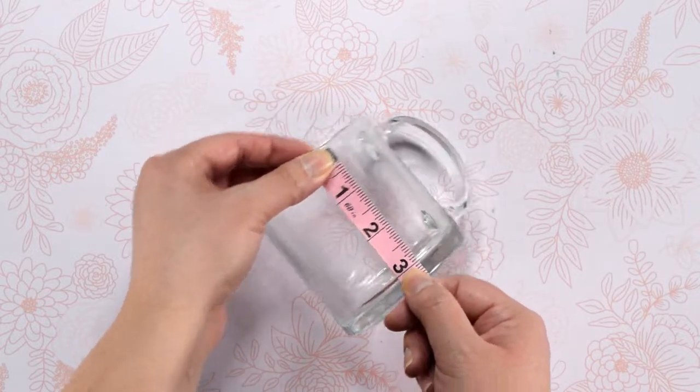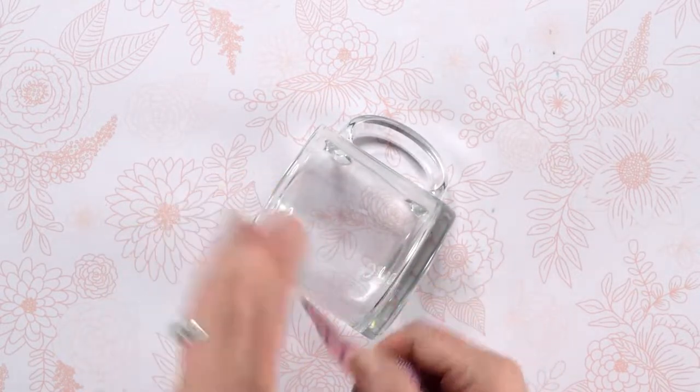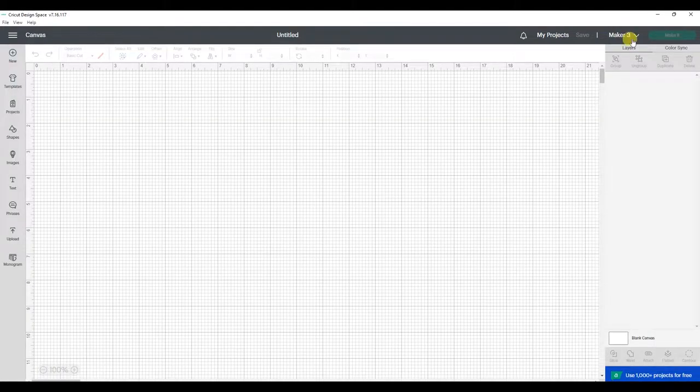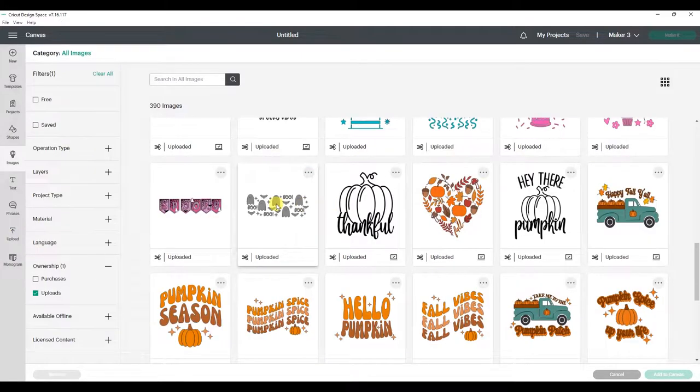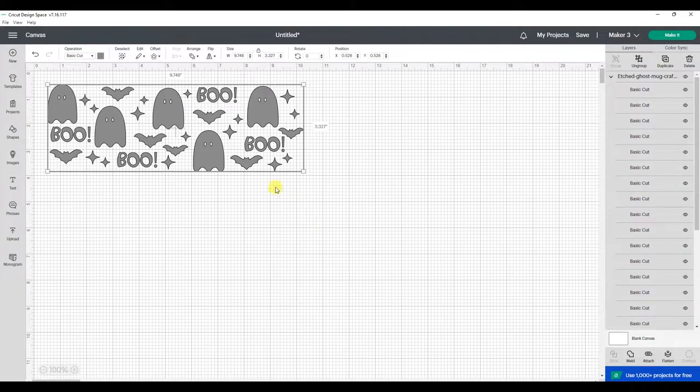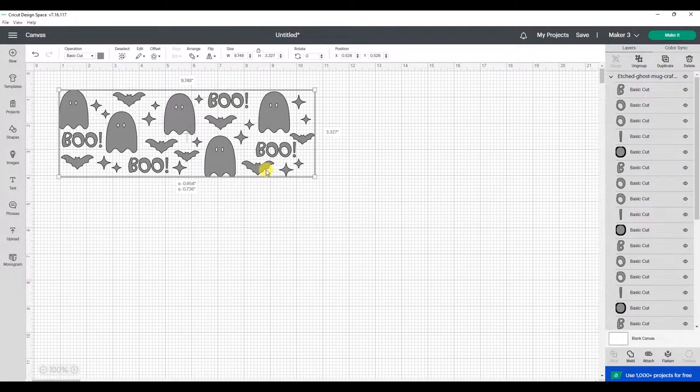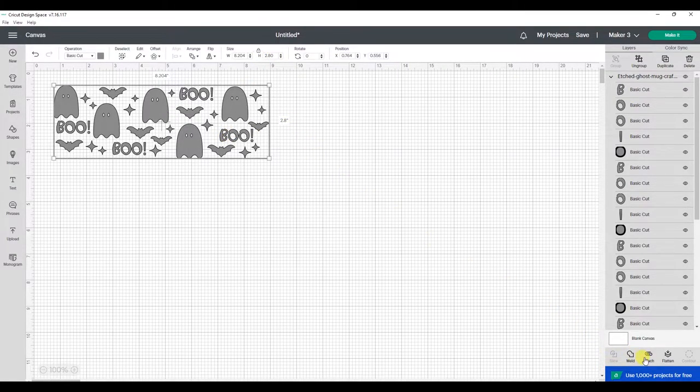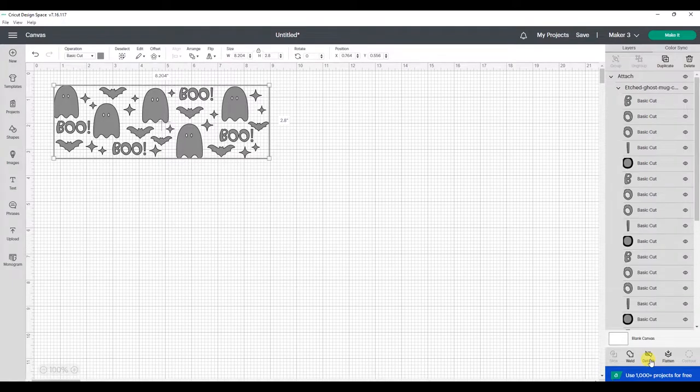Now in Cricut Design Space we can create a new project and then upload the Halloween mug design. I already have it uploaded, but if you need help with this part I will link a video below showing you how to upload designs to Design Space. Next, I'm going to adjust the size of the design to fit my mug. Then we need to select the entire design and click attach. This will keep all of the design elements together when they are cut. Now we can click make it and continue.